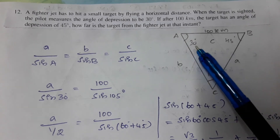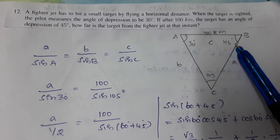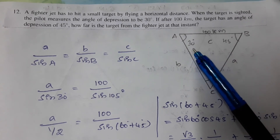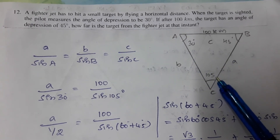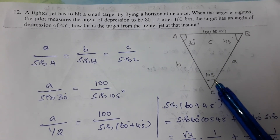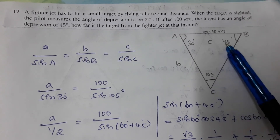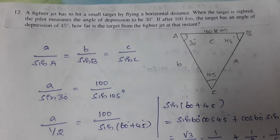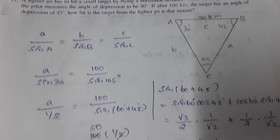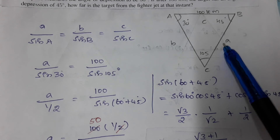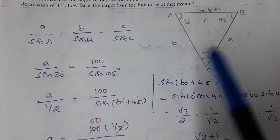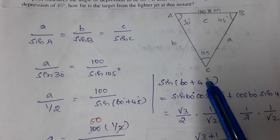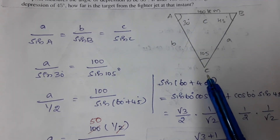The angles give us 30° and 45°, so the third angle in the triangle is 180° − 30° − 45° = 105°. We apply the sine rule: a/sin(30°) = 100/sin(105°).